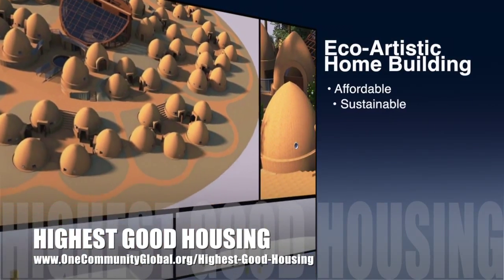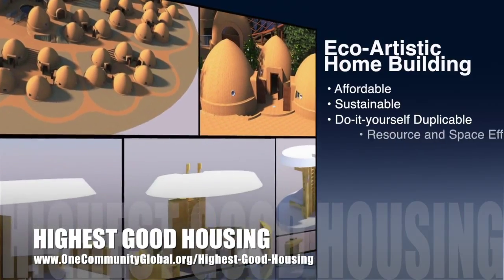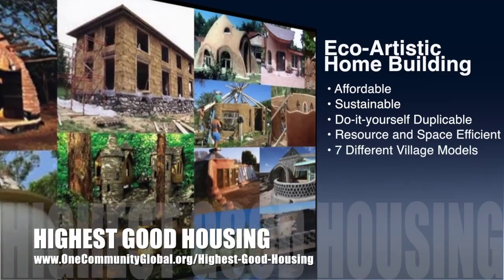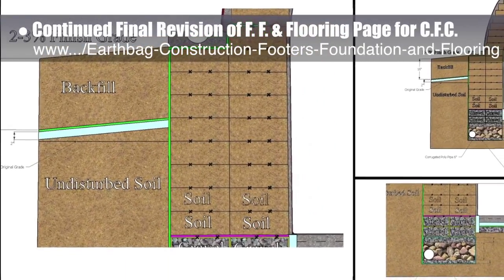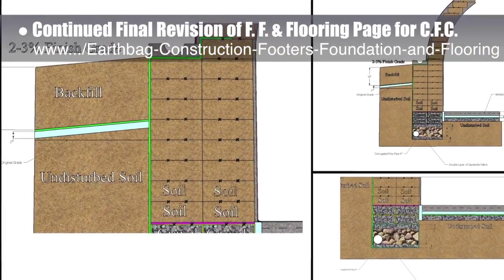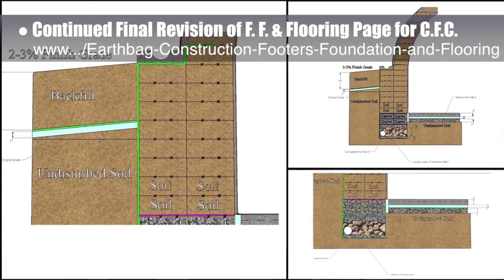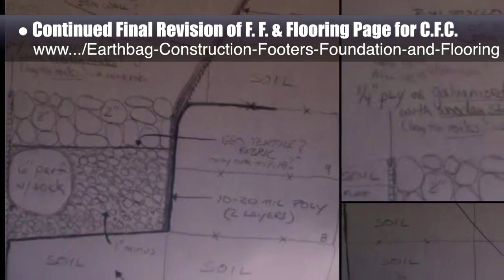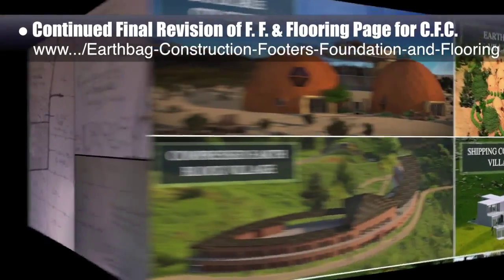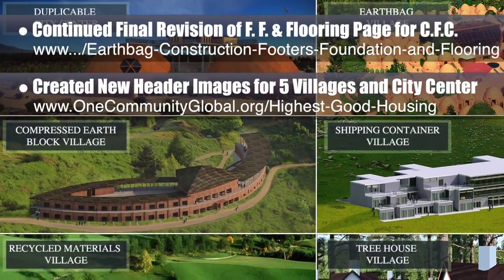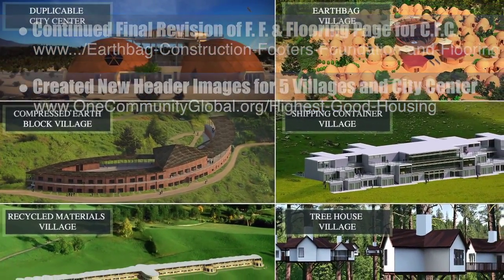The One Community approach to highest good housing is eco-artistic home building that is affordable, sustainable, do-it-yourself, duplicable, resource and space efficient, and consists of seven different sustainably constructed village models. This last week in highest good housing, the core team continued what we hope will be the final revision of the footers, foundations, and flooring page for the upcoming crowdfunding campaign. This included more floor construction narrative additions, design updates, creating a new compass base design, and creating an all-new below-ground water collection design that eliminates concrete — shown here as hand drawings. We're now 36% complete with this revision. We also created new header images for four of the five villages and the city center.